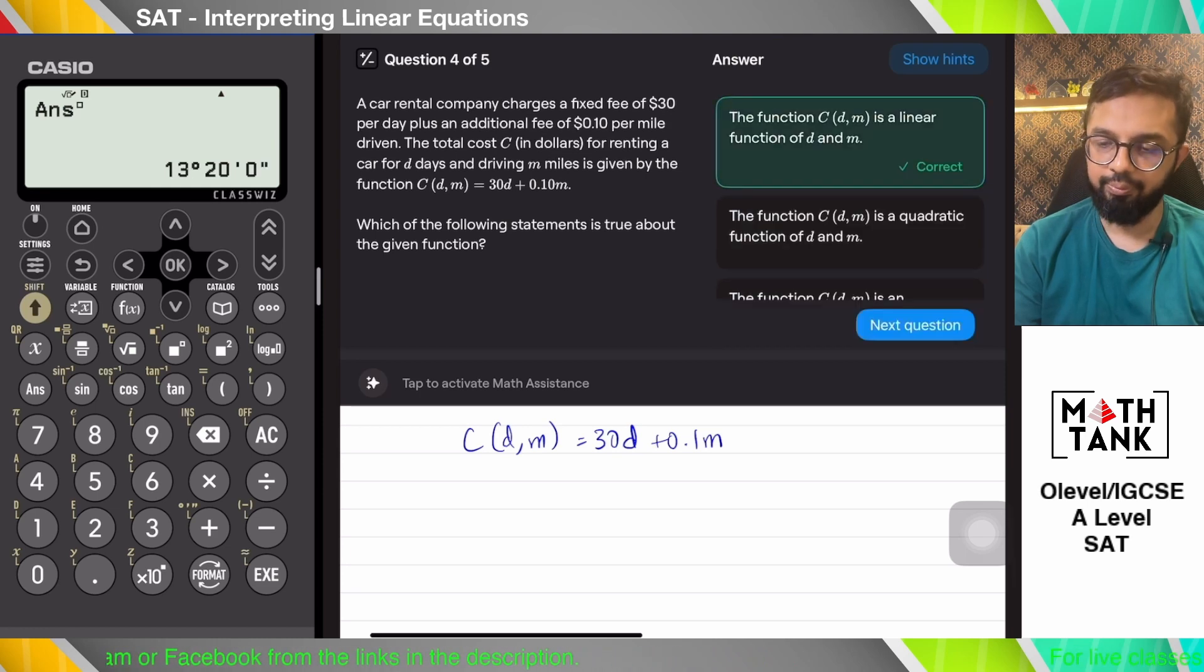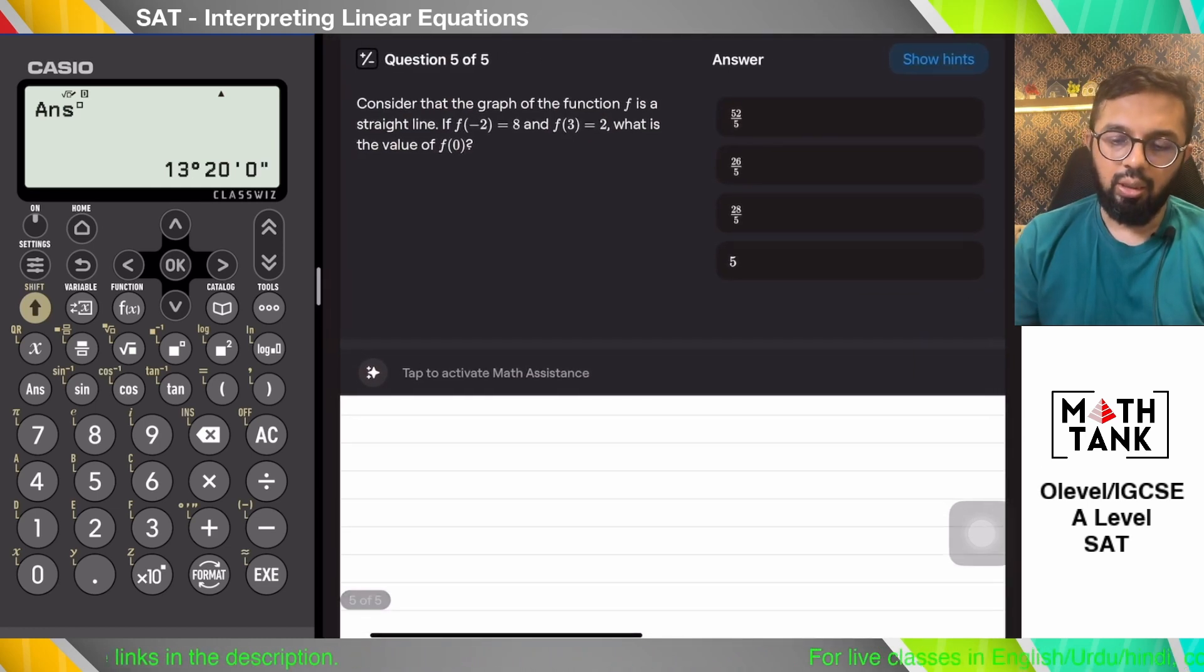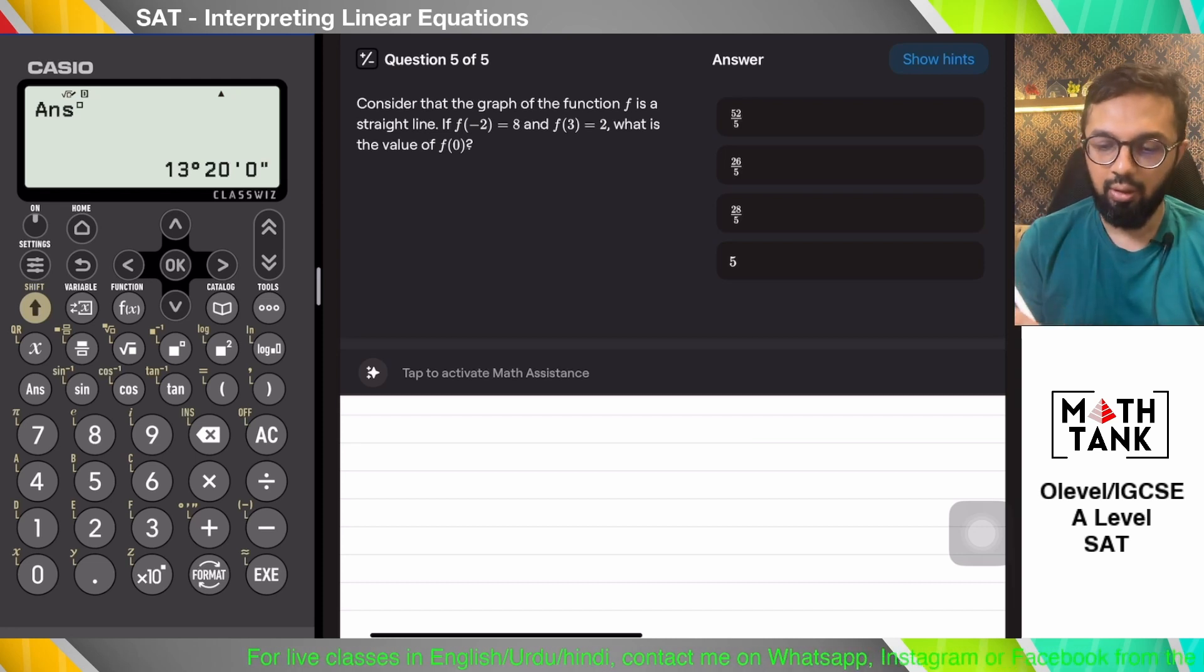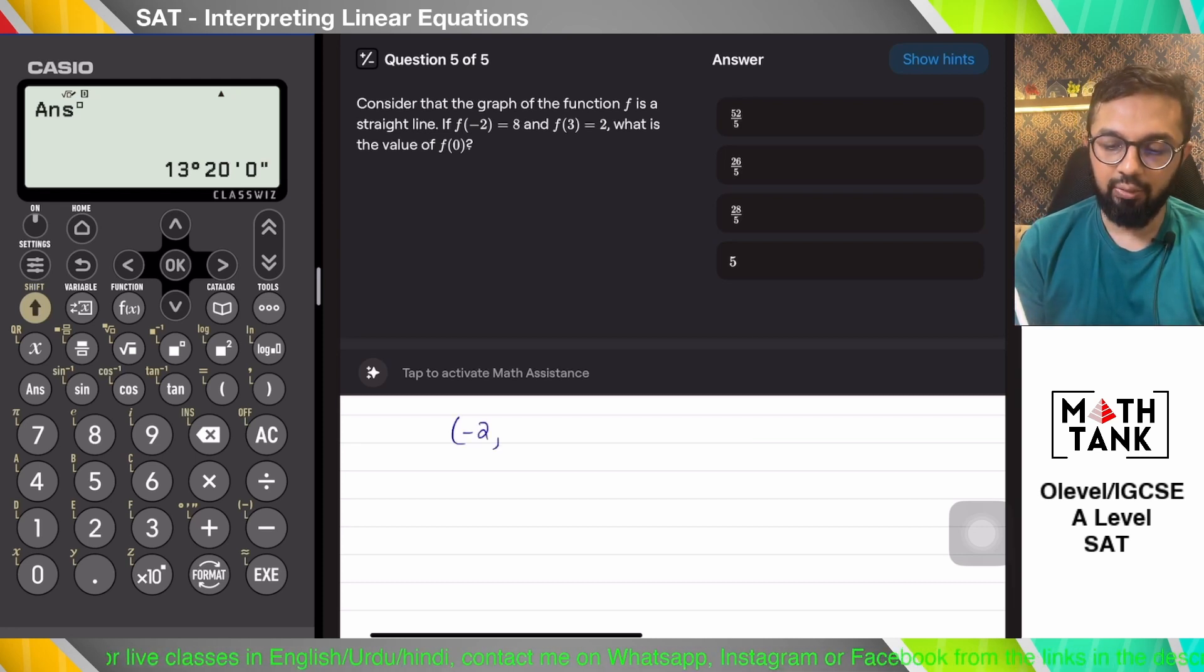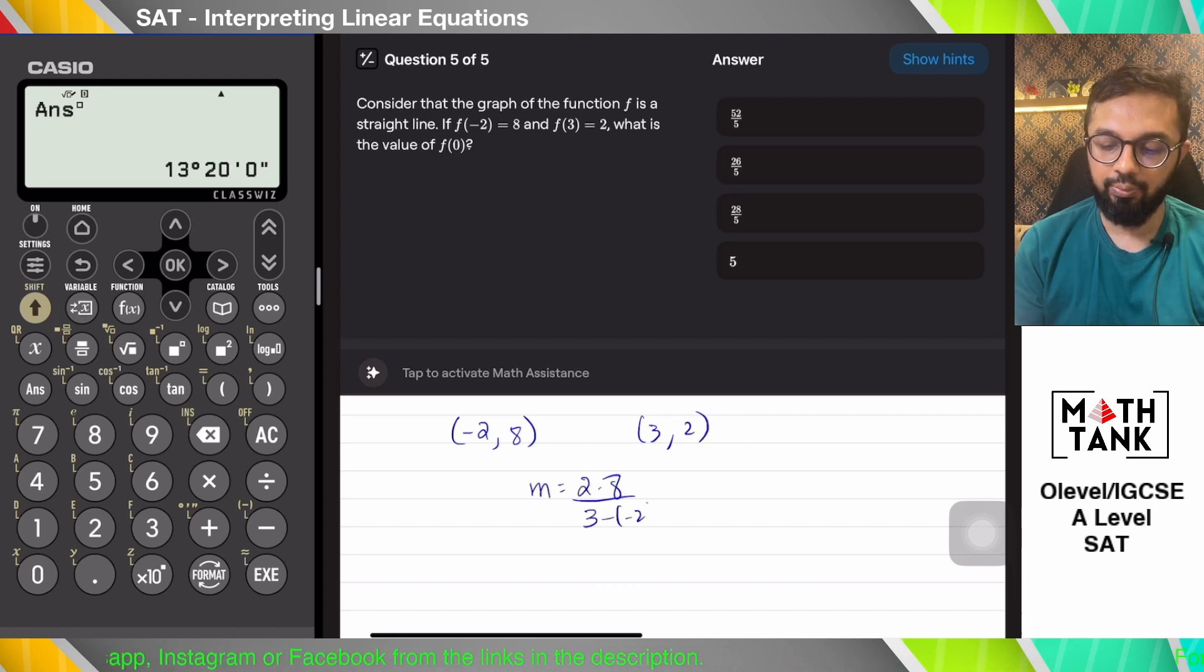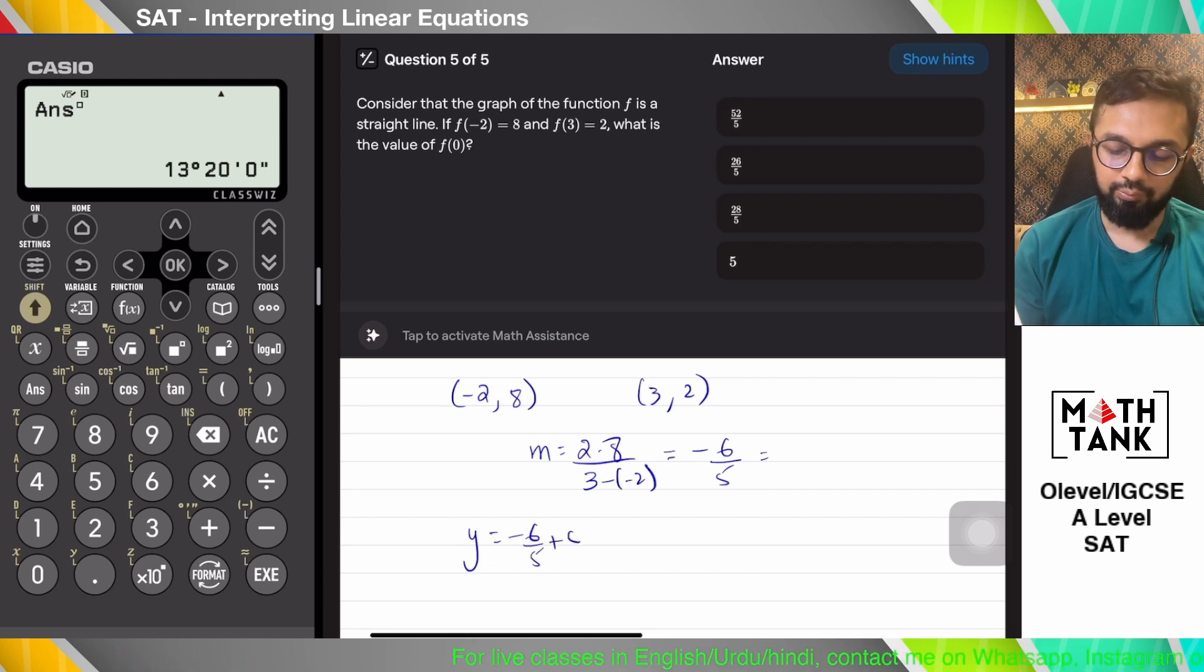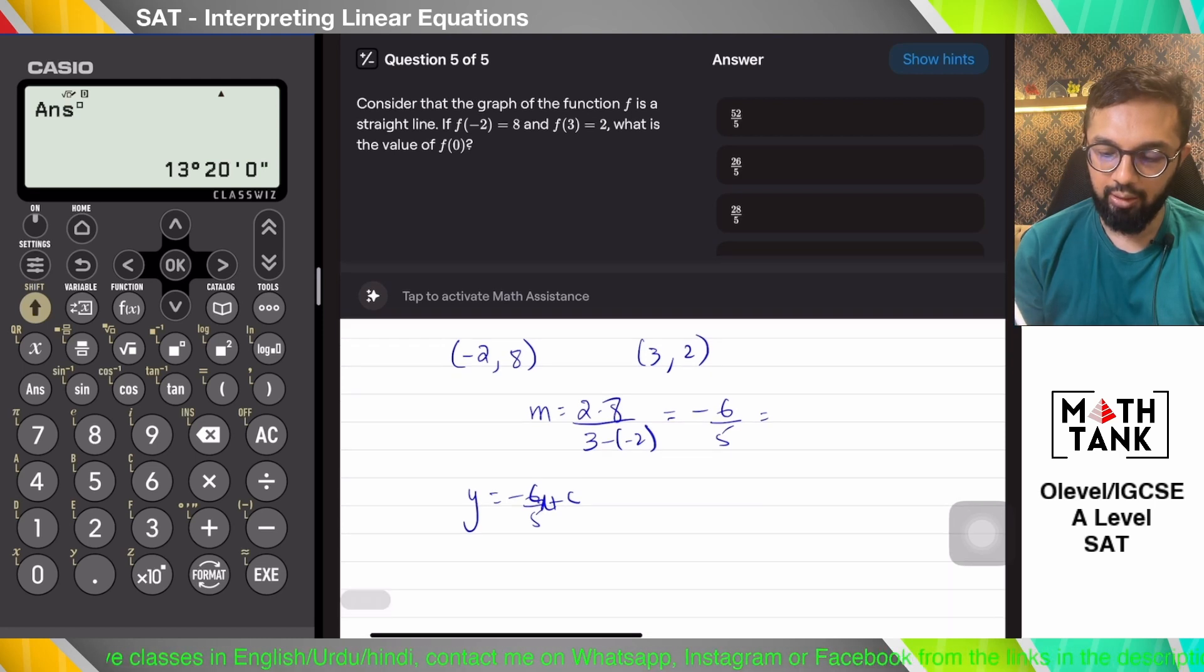Consider the function, f of a is a straight line. What is the value of f of 0? I can construct this expression. When x is minus 2, y is 8. When x is 3, y is 2. So the gradient is 2 minus 8 over 3 minus minus 2, which is minus 6 over 5. That's the gradient. Let's check for the y-intercept.